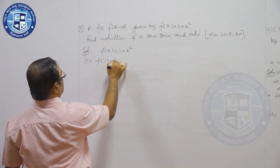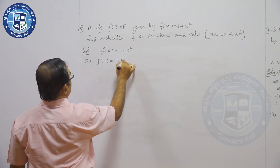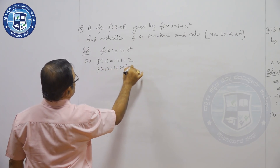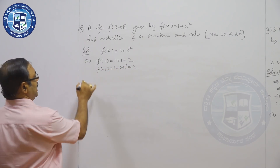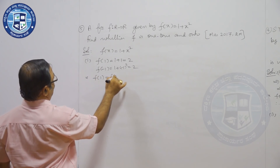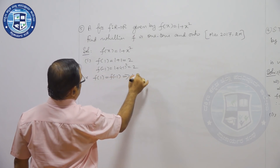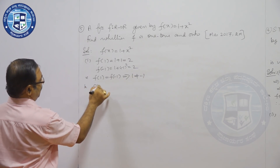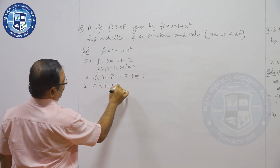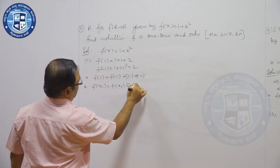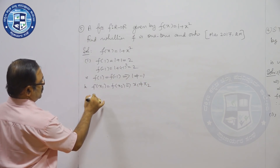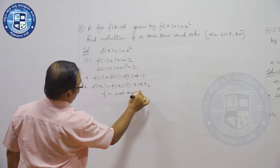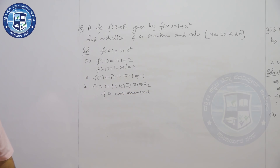f(1) = 1 + 1² = 2, and f(-1) = 1 + (-1)² = 2. So f(1) = f(-1), but 1 ≠ -1. That is, f(x₁) = f(x₂) does not imply x₁ = x₂. Therefore, f is not 1-to-1.